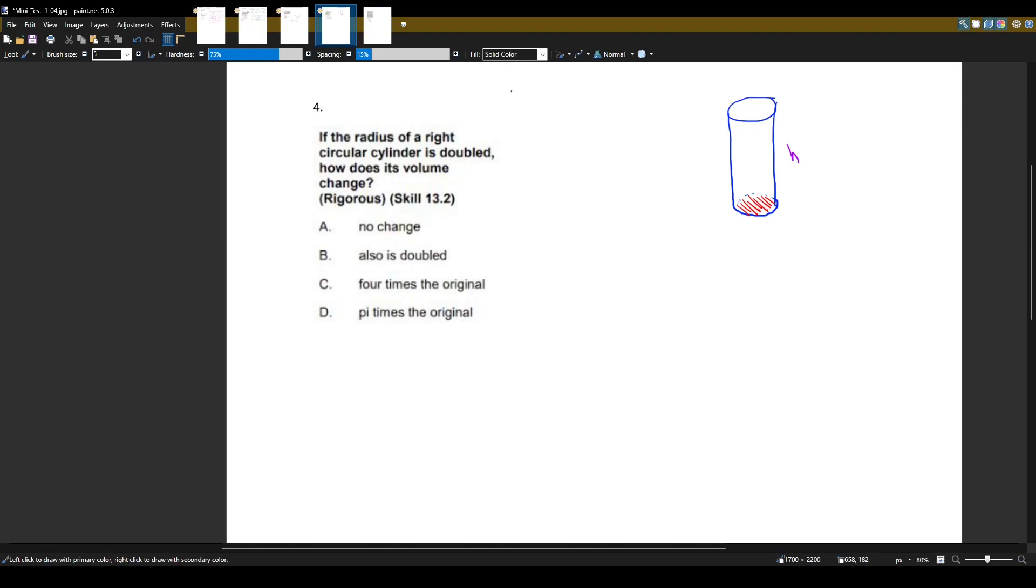So the volume of a cylinder is going to be the area of the circle, which is pi r squared, times the height. It's a circle with height.